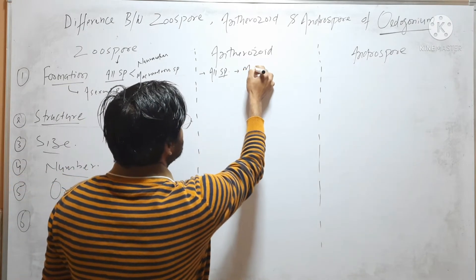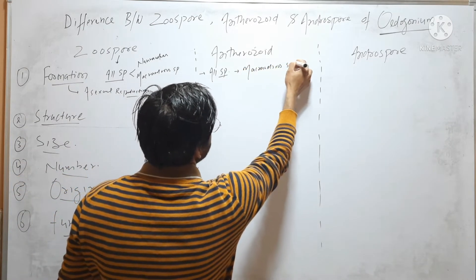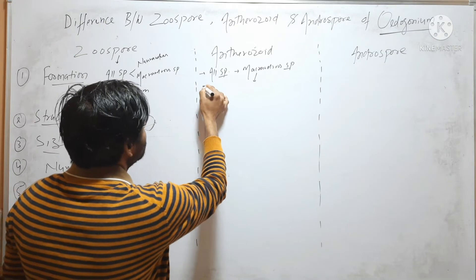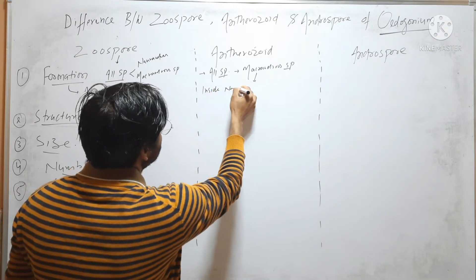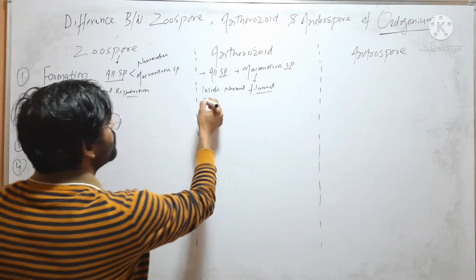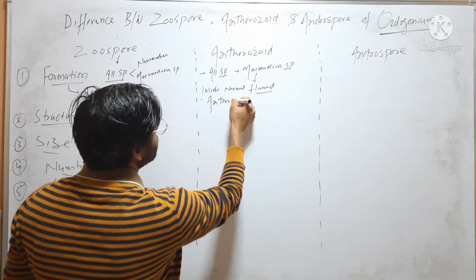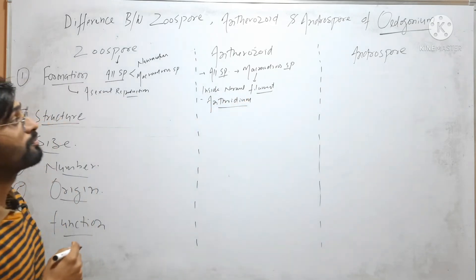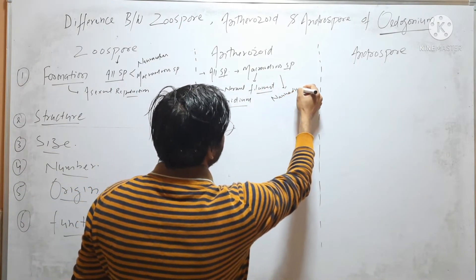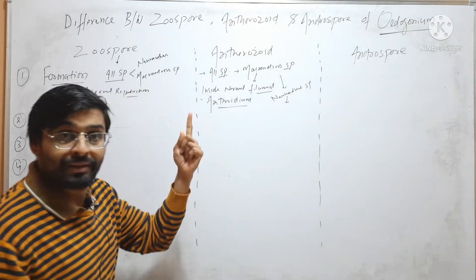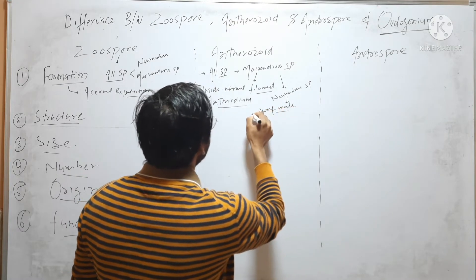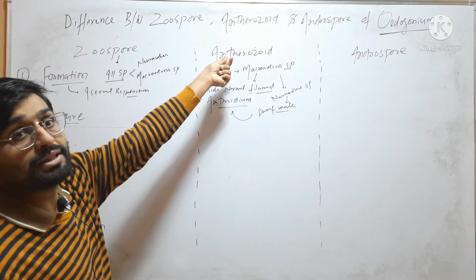In case of Macroandrous species, Antherozoid is formed inside the normal filament. In case of Nanoandrous species, it is formed on the dwarf male, because the dwarf male forms Antheridium, and inside each Antheridium, two Antherozoids are formed.